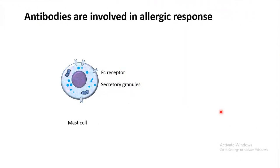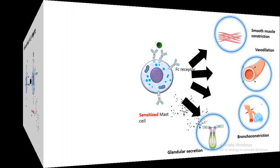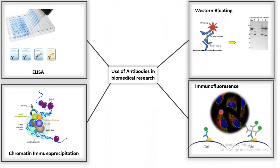Antibodies, especially IgE class antibodies, are involved in the allergic response. Mast cells, like other cells, also have Fc receptors that can bind to IgE antibody, making the mast cell a sensitized mast cell. When a sensitized mast cell encounters the allergen for a second time, it degranulates, producing a bunch of effects like smooth muscle contraction, vasodilation, bronchoconstriction, and glandular secretion.